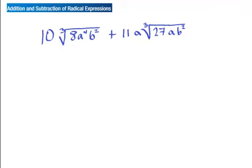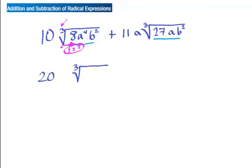Now let's look at a cube root problem — it's a mess. I zone in and see those radicands are not the same, so I can't add them as they sit. But I can check if something can be simplified, and if so they might reduce to the same thing. Since it's a cube root, I'm looking for triplets. Notice that 8 is a perfect triplet because 2×2×2=8, so that comes out perfectly as 2, leaving 20 inside. For the variable a to the fourth power, that's a×a×a — that triplet comes out as a.